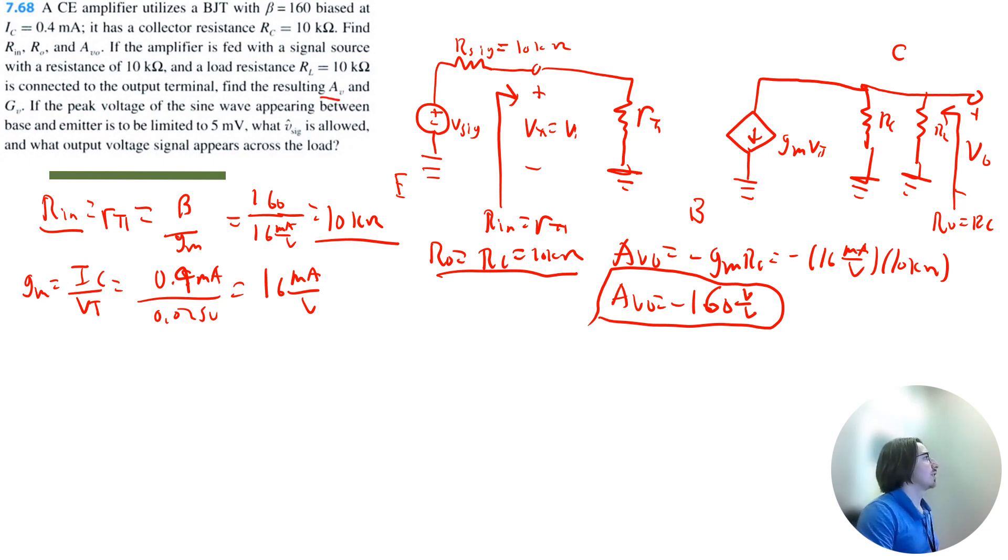Find the resulting closed-circuit gain Av and Gv. So Av is the closed-circuit voltage gain. And it's basically just the open circuit gain, but we are doing the resistor division between the load and the output resistor. So it will be Avo times RL divided by RL plus Ro. So that is negative 160 times 10 divided by 10 plus 10. So that's going to be negative 80 volt per volt.